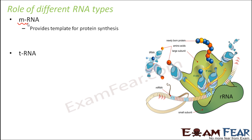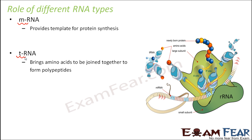Next is the tRNA, which is the transfer RNA. Transfer means to carry something from one place to another. So these RNA carry amino acids to be joined together to form polypeptides. Proteins are made up of amino acids, so RNA actually brings amino acids and joins them with peptide bonds to form proteins. Transfer RNA will carry the amino acids which need to be joined together to form proteins.